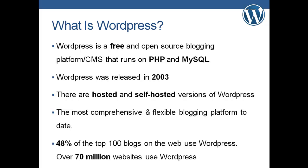WordPress runs on PHP, which is a server-side scripting language, and MySQL, which is a relational database system. All your posts, categories, pages, and images are stored in a MySQL database. WordPress was released in 2003 and there are hosted and self-hosted versions available. From this point on, the series is going to be focused on the self-hosted version — the version that we actually download and install on our own server.